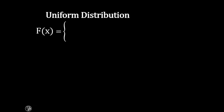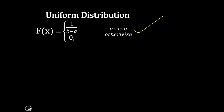Our uniform distribution gives us 1 over b minus a, and 0 otherwise, whereby the interval of x has x greater than or equal to a and less than or equal to b, and 0 otherwise. This is the probability density function of a uniform distribution.